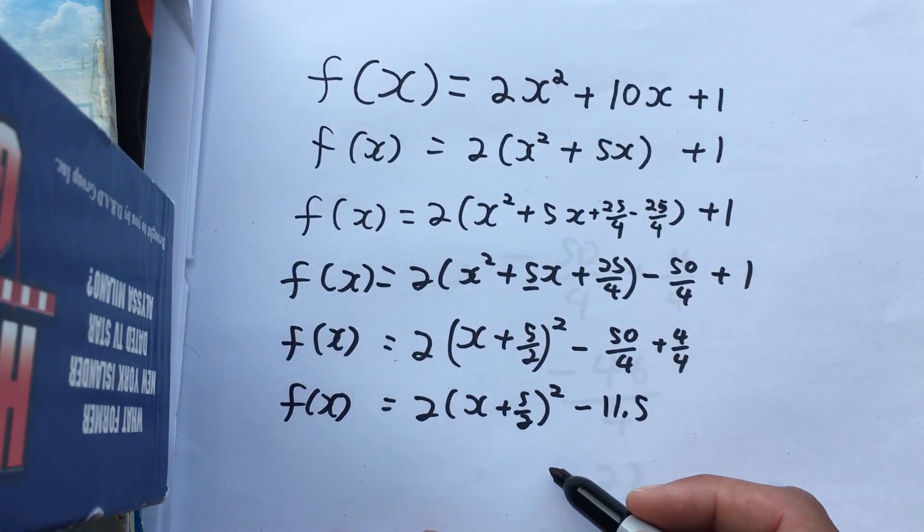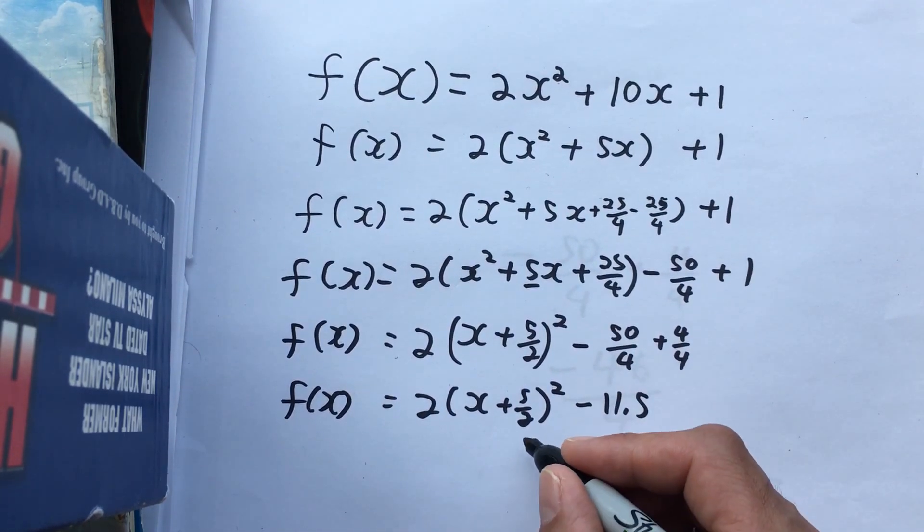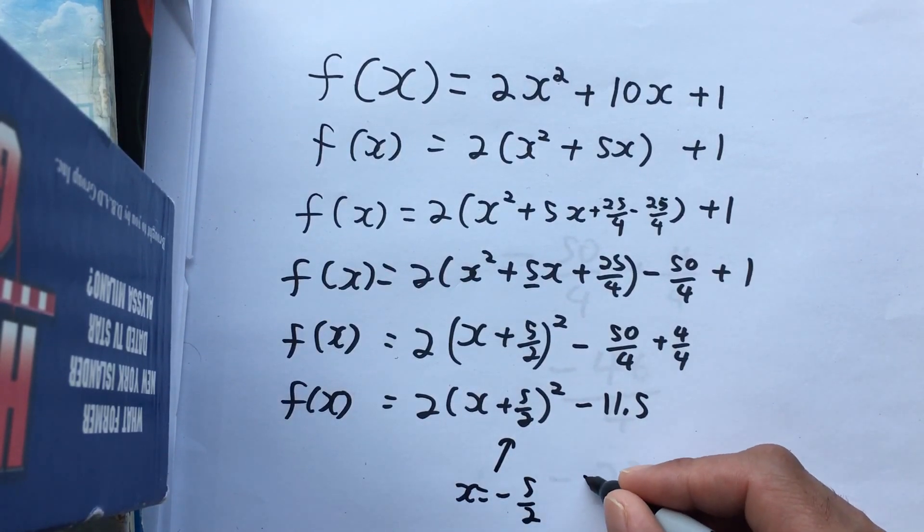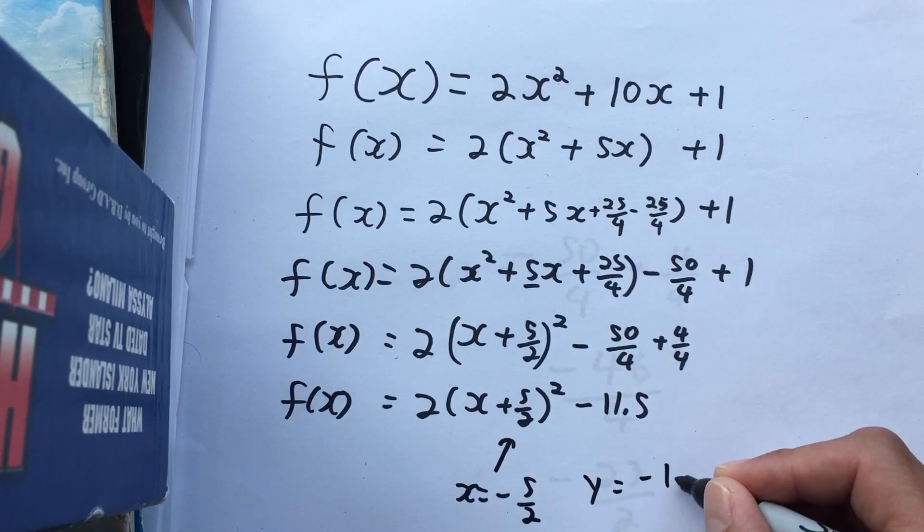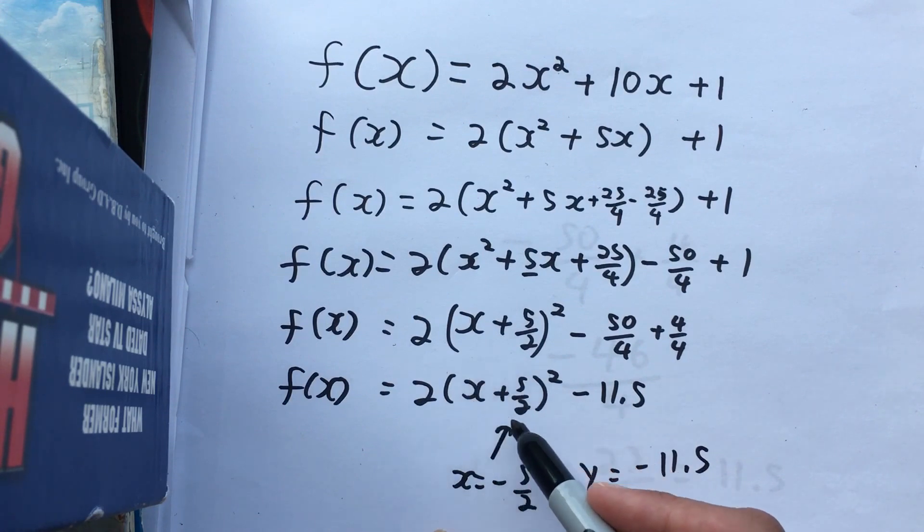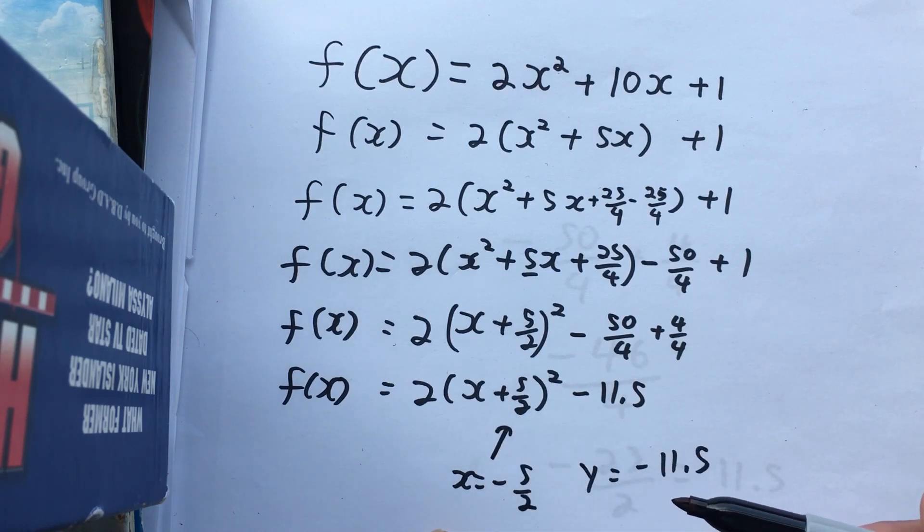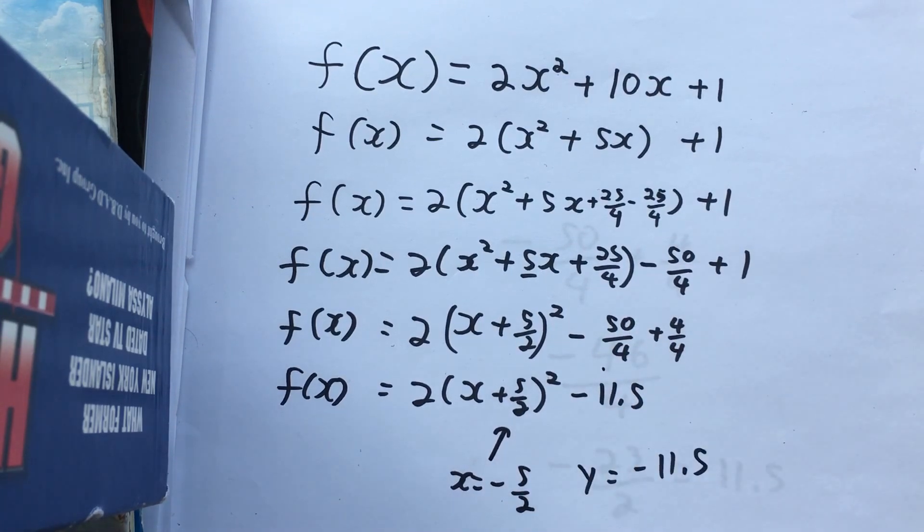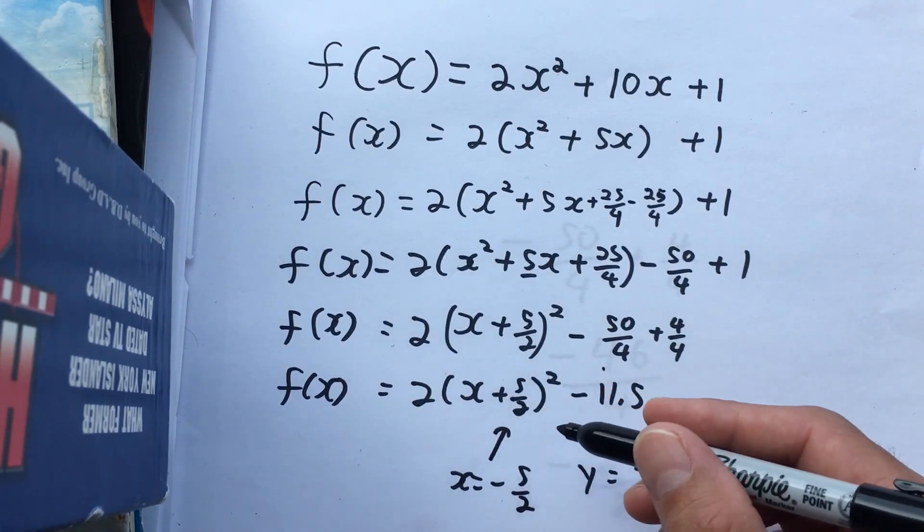Now that we're done, let's interpret this. We have a vertex where x is negative 5 over 2, and y is negative 11.5. And remember, this can be a little bit tricky when you first see it. Whatever's inside of here is backwards, with reference to the location of the x value of your vertex. You can fully understand that when we get into transformations, and when you look at it as an inverse, it becomes obvious as to why.